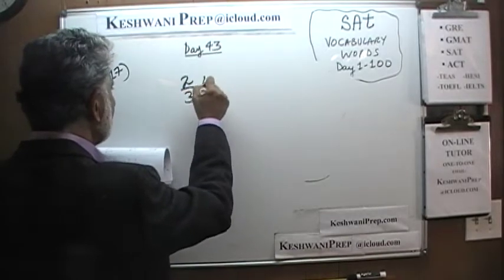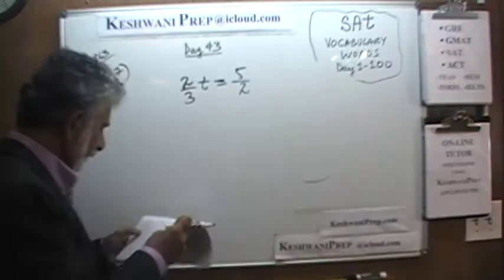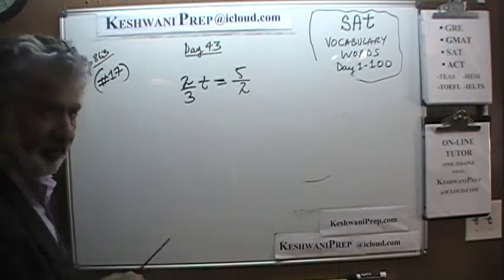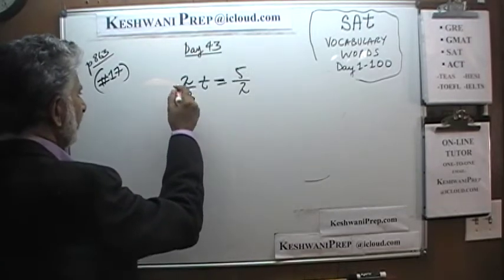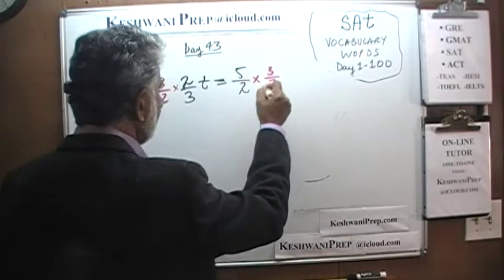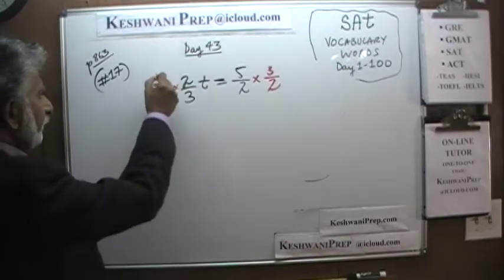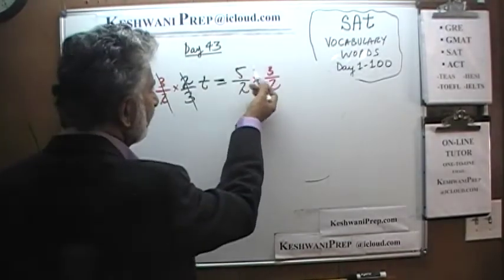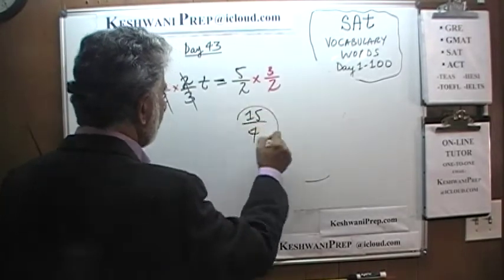The next one is very simple. We are told 2 thirds of t is equal to 5 halves. The question simply is, how much is t? That's very straightforward. If you just want to find t, multiply both sides by the reciprocal of this fraction, which is 3 over 2. This 3 over 2 cancels out with the 2 thirds, and t is equal to 5 times 3 over 2 times 2, which is 15 over 4.